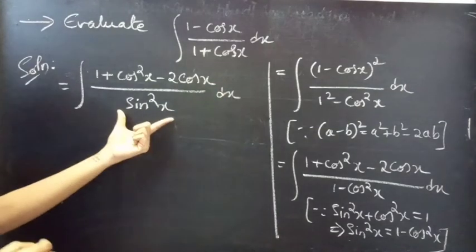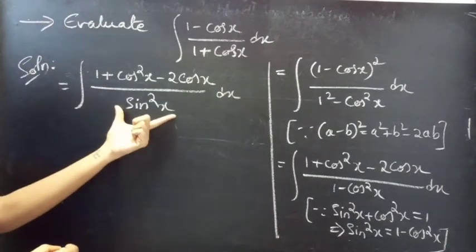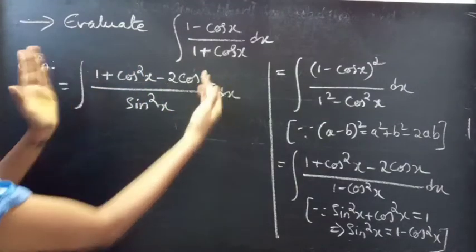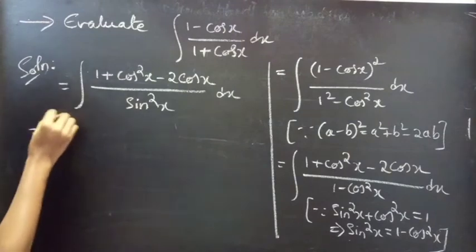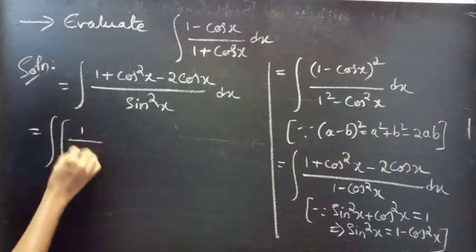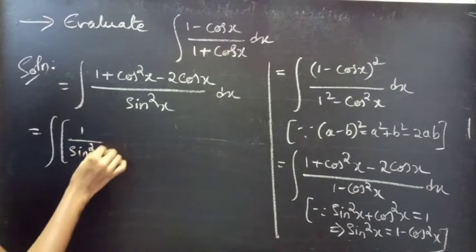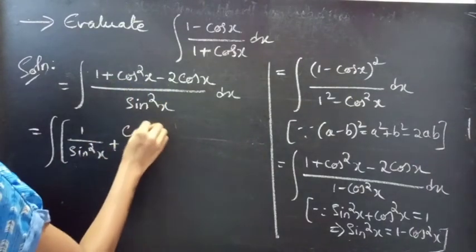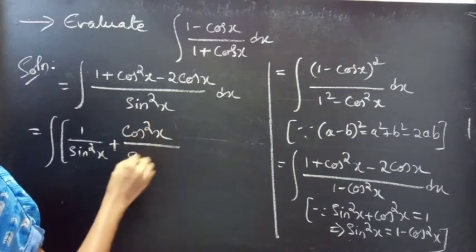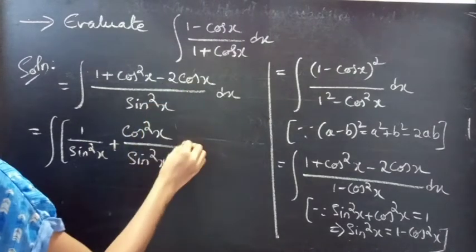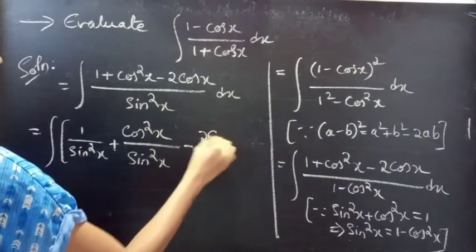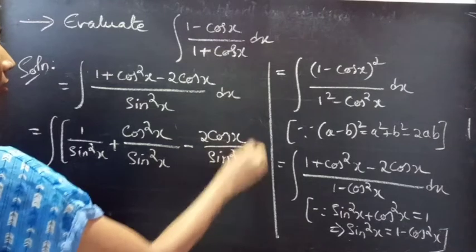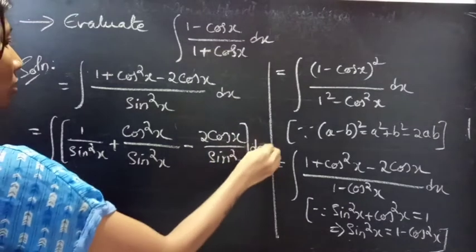This becomes integral of (1 plus cos squared x minus 2 cos x) divided by sin squared x, dx. Since we have 1 term in the denominator and 3 terms in the numerator, we can split the total fraction into 3 fractions: 1 over sin squared x, plus cos squared x over sin squared x, minus 2 cos x over sin squared x, all times dx.